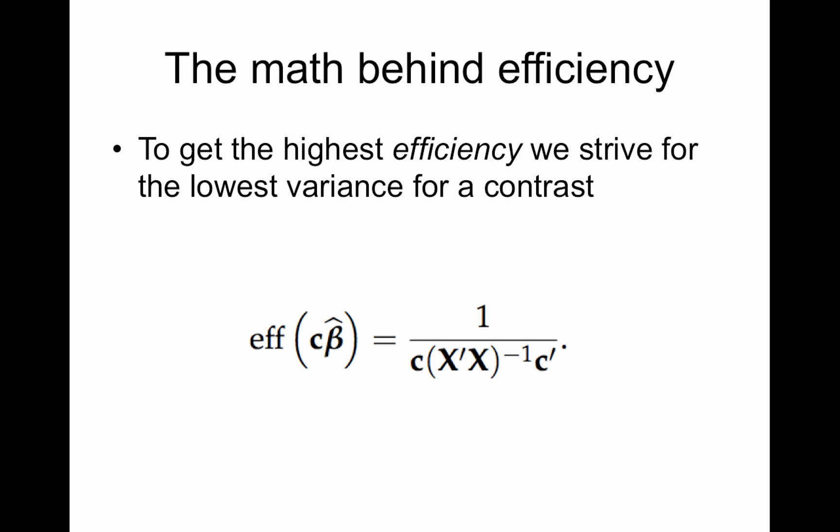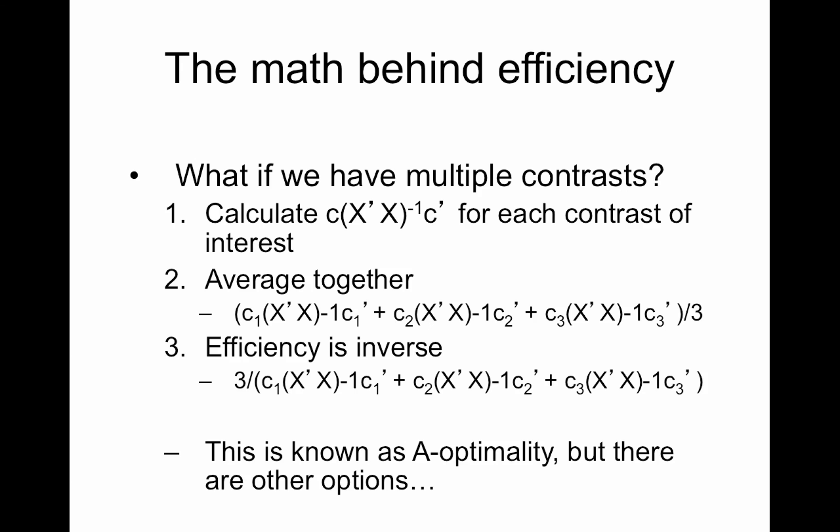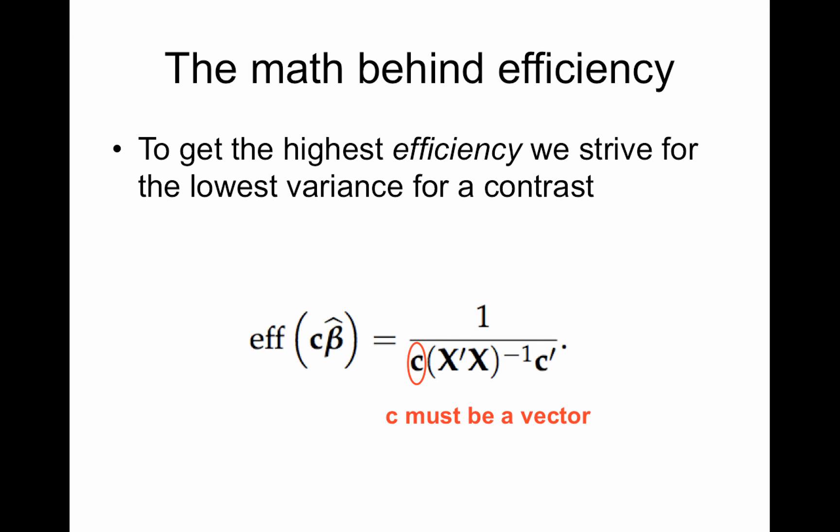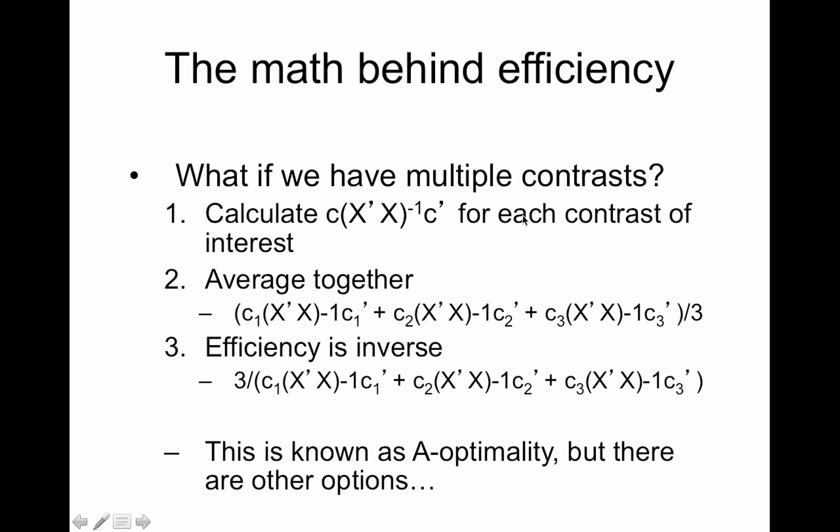Okay, so does that make sense? Make sure that makes sense to you. If not, pause and think about it for a second. All right, so C has to be a vector. I'm not working on efficiency for an F test. That would be when C is a matrix. So that has to be a vector. So here's the math behind the efficiency.